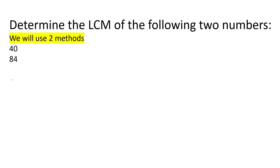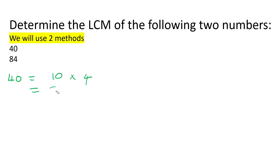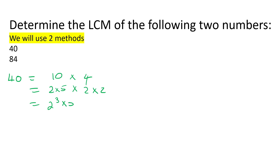Let's do it without a calculator first. We take the number 40 and break that number down — so 10 times 4. Some teachers use a different breakdown method; you can also do that. Now 10 is the same as 2 times 5, and 4 is the same as 2 times 2. These numbers are all prime so you can't go any smaller. So we can say 40 is 2³ × 5.